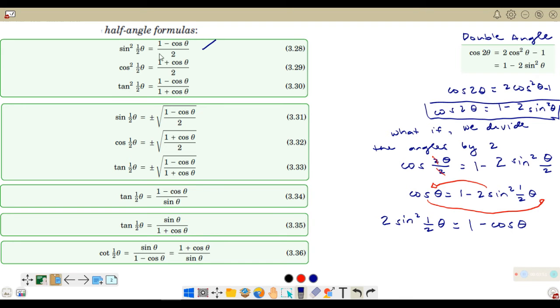We have here negative 2 sine squared 1 half theta will become positive 2 sine squared 1 half theta equal to 1. 1 is still there. But cosine theta, since we moved it to the other side using subtraction property of equality, this is going to be 1 minus cosine theta. This is the right-hand side of our equation. Sine squared 1 half theta. We still have 2 on this side of the equation. So, we have to divide both sides by 2. You will be left with sine squared 1 half theta is equal to 1 minus cosine theta over 2.